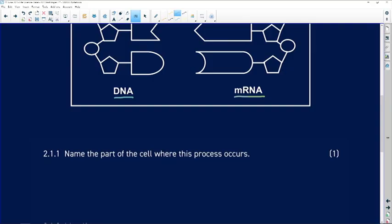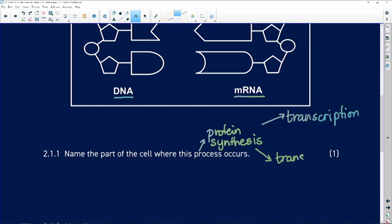Our first question says, name the part of the cell where this process occurs. So we have, in terms of protein synthesis, we have two different processes. One of those processes is called transcription, which is the copying of the gene. The other is called translation, which is where we translate or change the language of the organic molecule that we're looking at from a nucleic acid into a protein.